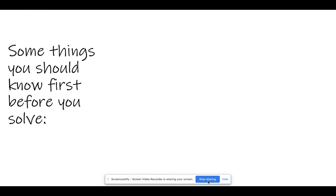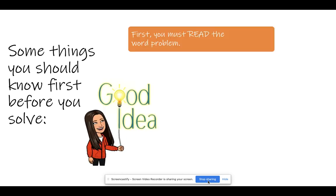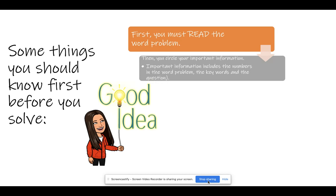Remember that there are some things you should know before you solve any type of word problem. First, you must read the problem. Then, you circle your important information. The important information includes the numbers in the word problem, the keywords, and the question.